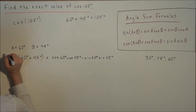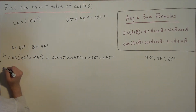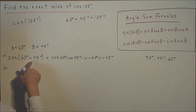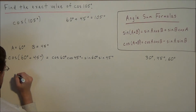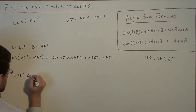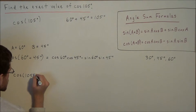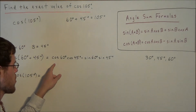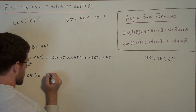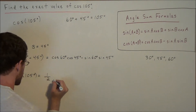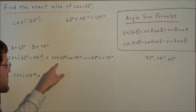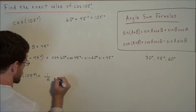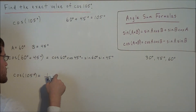For line 2, notice how we have cosine of 60 degrees plus 45 degrees. Now we can simplify this back to cosine of 105 degrees. So we have cosine of 105 degrees equals, and now we have cosine of 60 degrees, which is one-half. Cosine of 45 degrees is equal to the square root of 2 divided by 2.